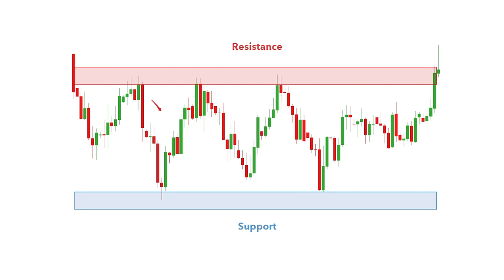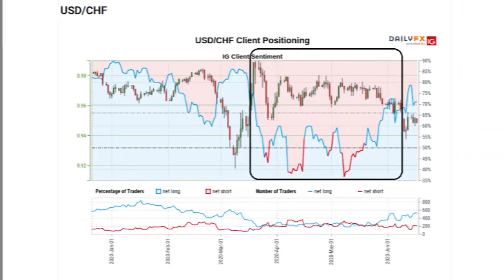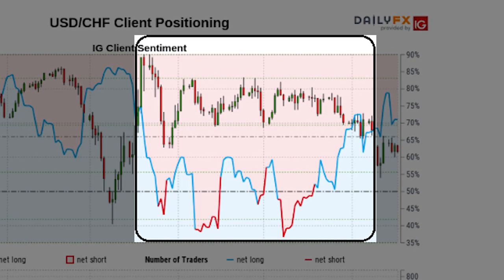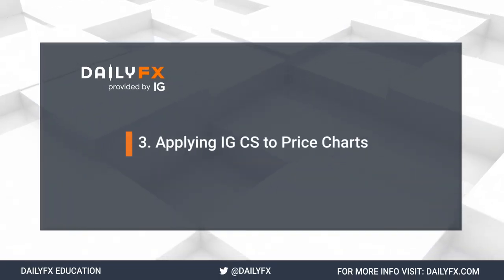So far, you have seen how insightful IG client sentiment can be as a contrarian indicator when applied to trending markets. Ranging markets, however, should be viewed from a different perspective. Attempting to buy the dip and sell at the peak carries more credibility when markets have been trading between significant levels of support and resistance. This becomes clear when observing a ranging market with the IG client sentiment overlay, as sentiment tends to move in a similar way to price action as traders attempt to pick directional changes.